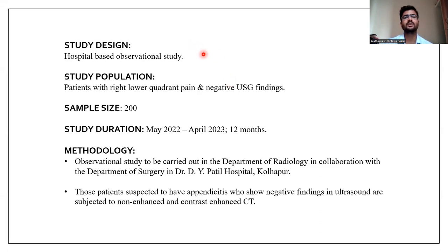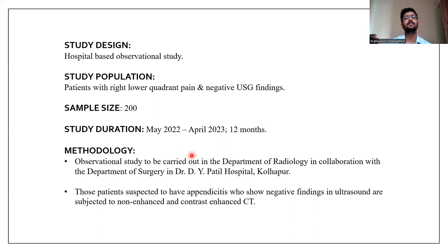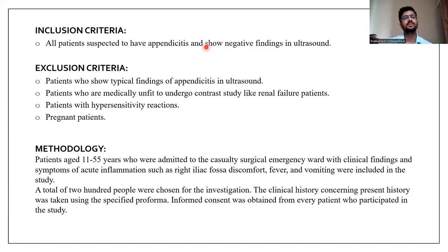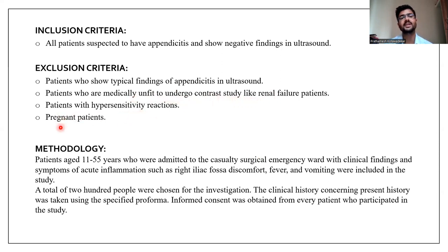This study is a hospital-based observational study. The patients had right lower quadrant pain with negative USG findings. The sample size was 200, and the study duration was from May 2022 to April 2023, a 12-month period, carried out in the Department of Radiology in collaboration with surgery at Dr. Uyav Patil Hospital, Kollapur. Inclusion criteria were all patients suspected to have appendicitis with negative USG findings. Exclusion criteria included patients with typical appendicitis findings on ultrasound, patients medically unfit for contrast study such as renal failure, hypersensitivity, or pregnant patients. The age range considered was 11 to 55 years.